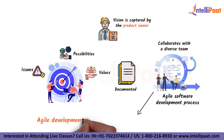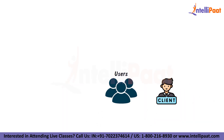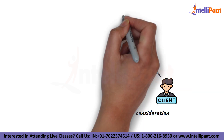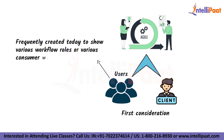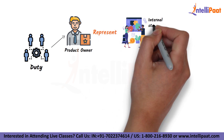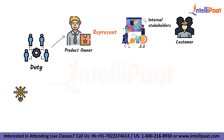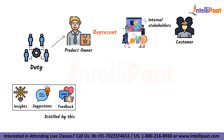An Agile development process involves a number of responsibilities. There are two important components: first is the user. The user or client is always the first consideration in an Agile process. User Personas are frequently created today to show various workflow roles or various consumer wants and behaviors. The second is the Product Owner, whose duty is to represent all internal stakeholders as well as the customer.